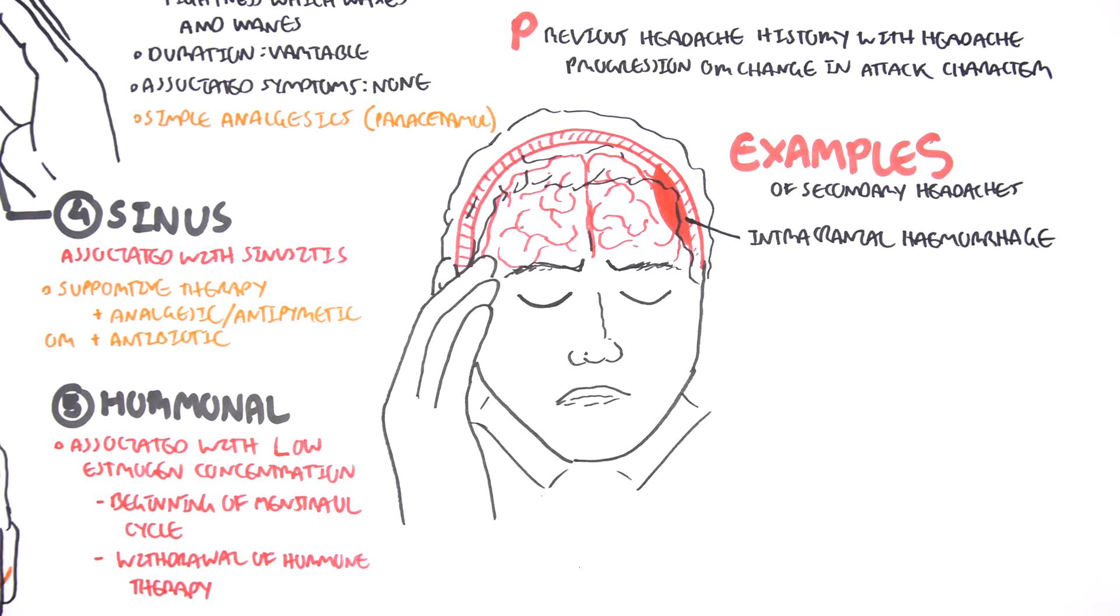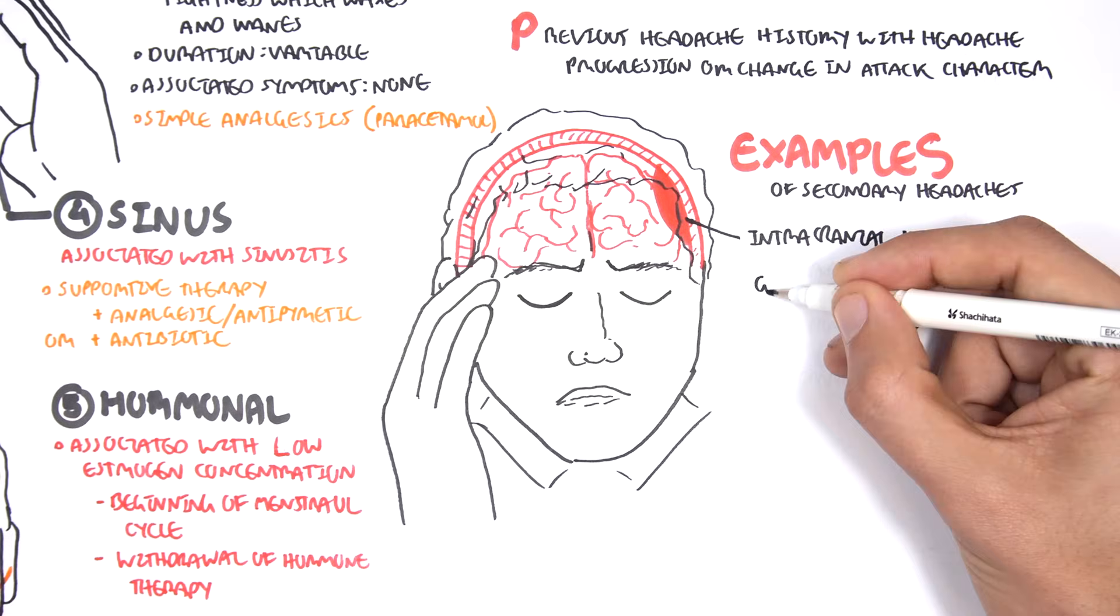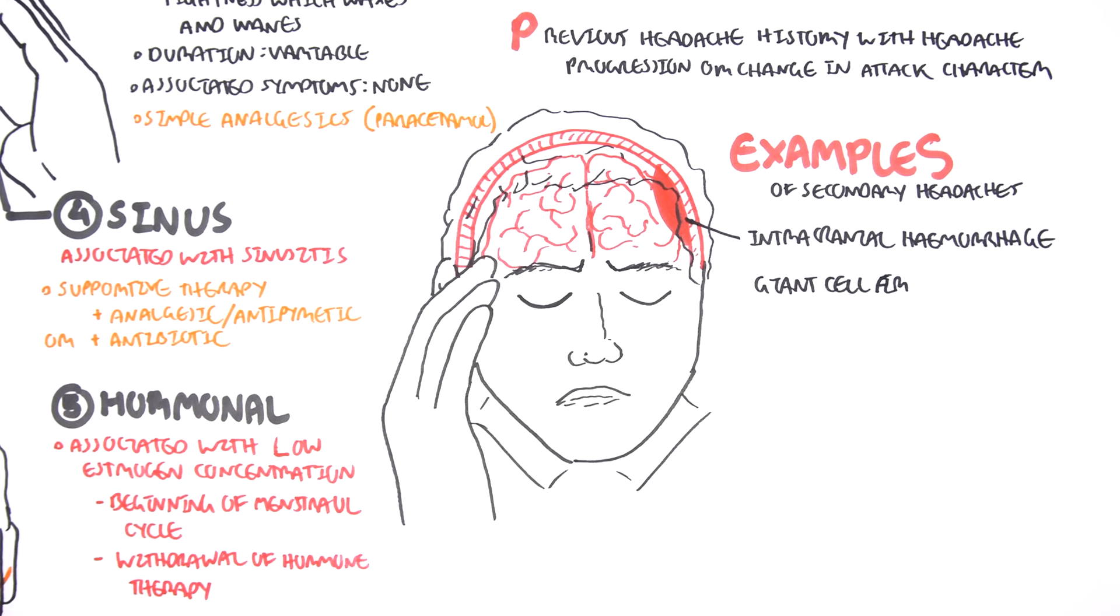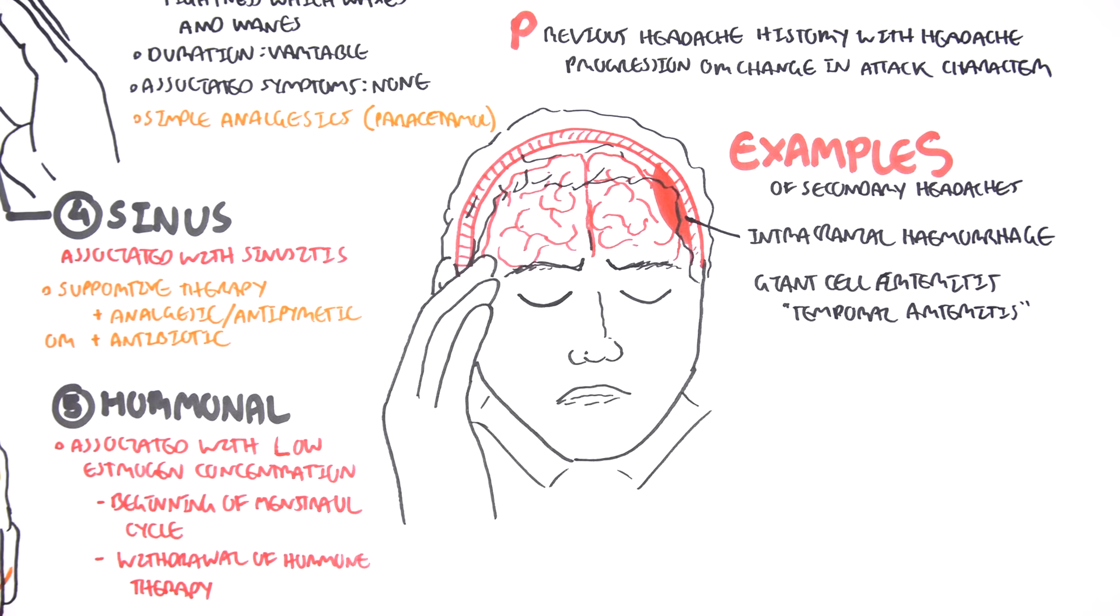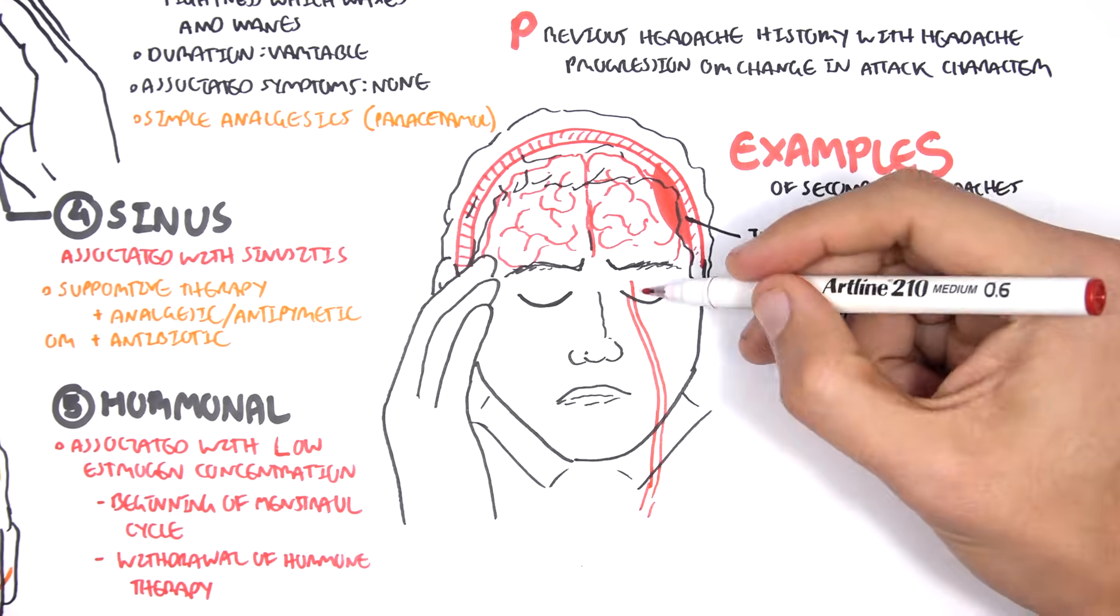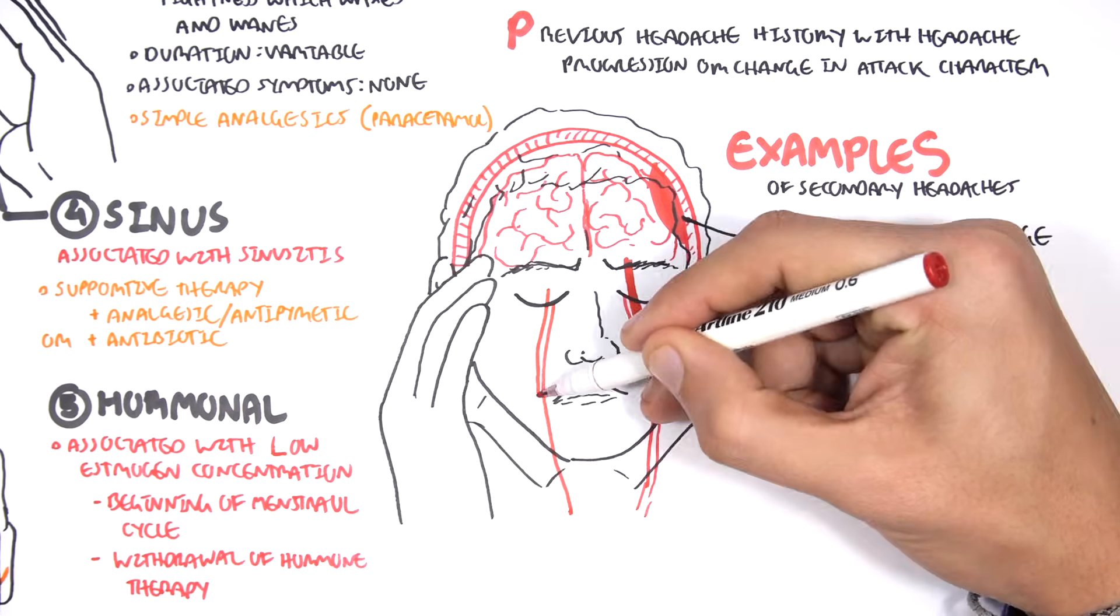These people can present with some neurological problems as well as some complaining of thunderclap, essentially, that the onset was thunderclap. Then you can have another example: giant cell arteritis, which is also known as temporal arteritis, which is essentially the temporal artery that is inflamed on the side of your head. The final example of a secondary headache is an internal carotid dissection.